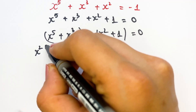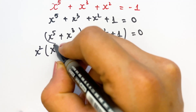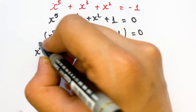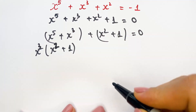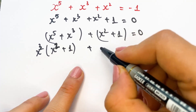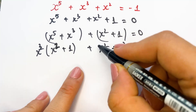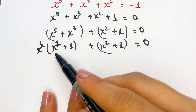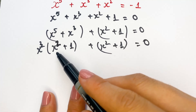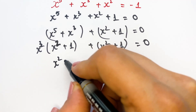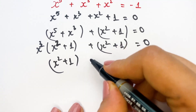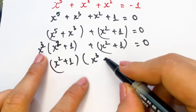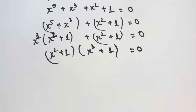Factor out x³ from the first two terms to get x³(x² + 1), and then the remaining terms give (x² + 1). So we have (x³ + 1)(x² + 1) = 0. We can identify the common factor (x² + 1) and (x³ + 1).